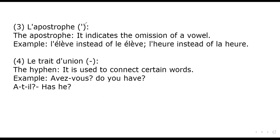La apostrophe — the apostrophe — indicates the omission of a vowel. For example: l'élève instead of le élève; l'art instead of le art. Next is le trait d'union, the hyphen, which is used to connect certain words. For example: a-t-il — here 'a' is the verb and 'il' is the subject — meaning 'do you have'; and a-t-il meaning 'has he'.